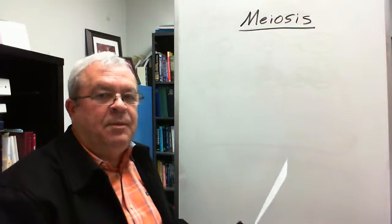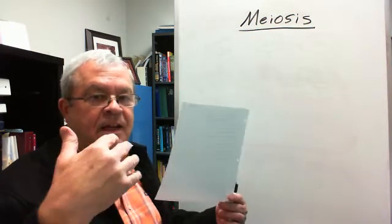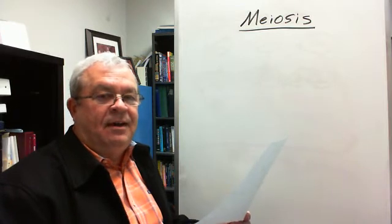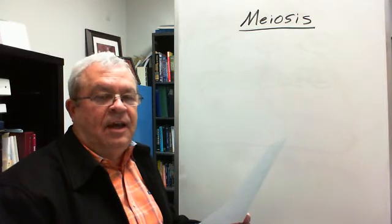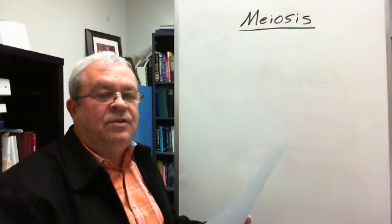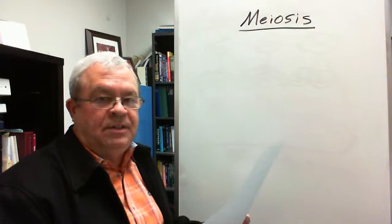Gametes. Yes, gametes. Meiosis occurring in us is producing gametes, egg cells or sperm cells. And so, meiosis in the animal kingdom produces gametes.